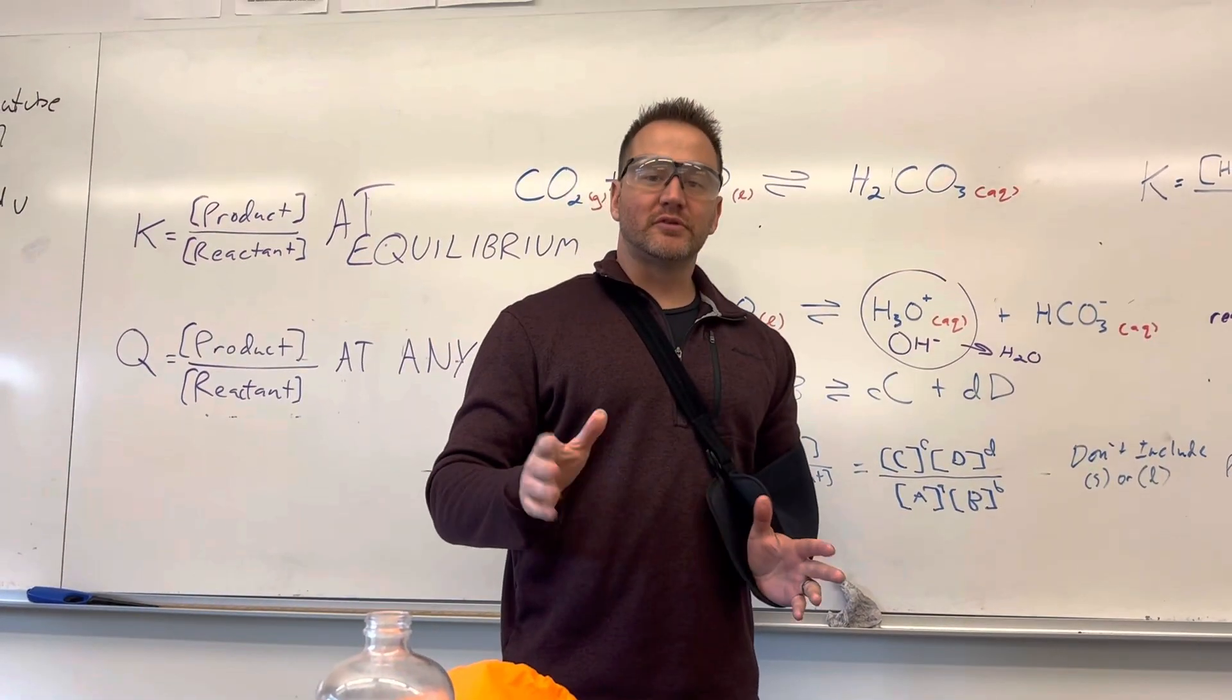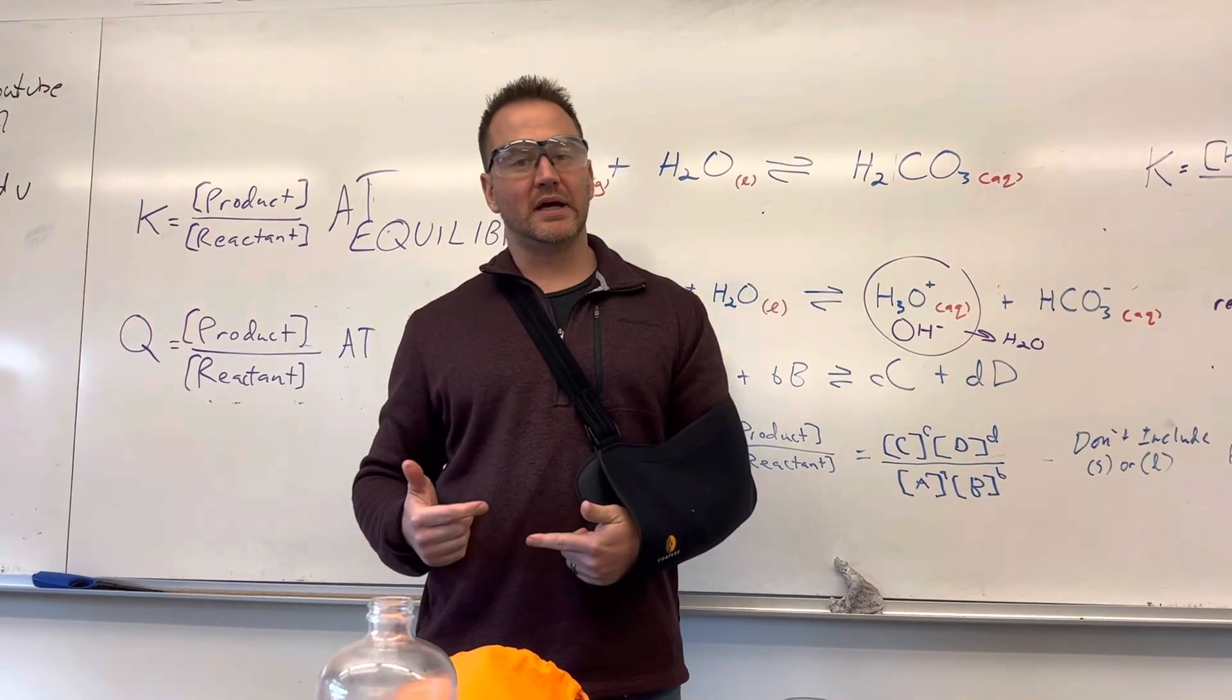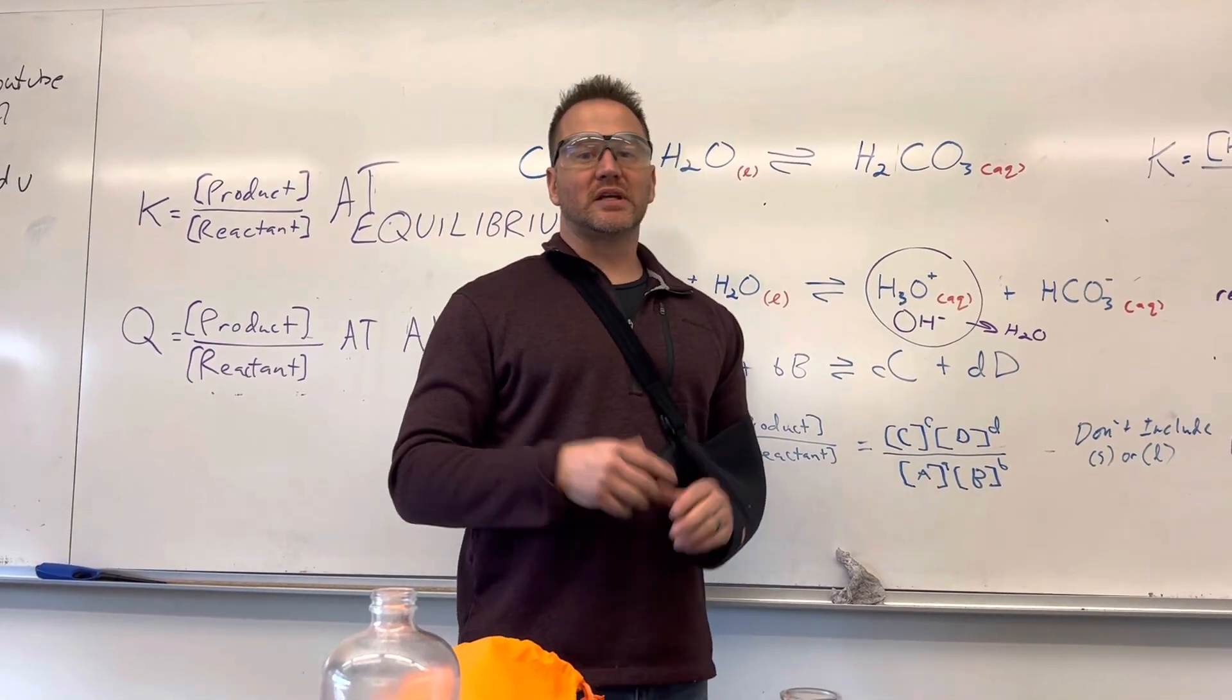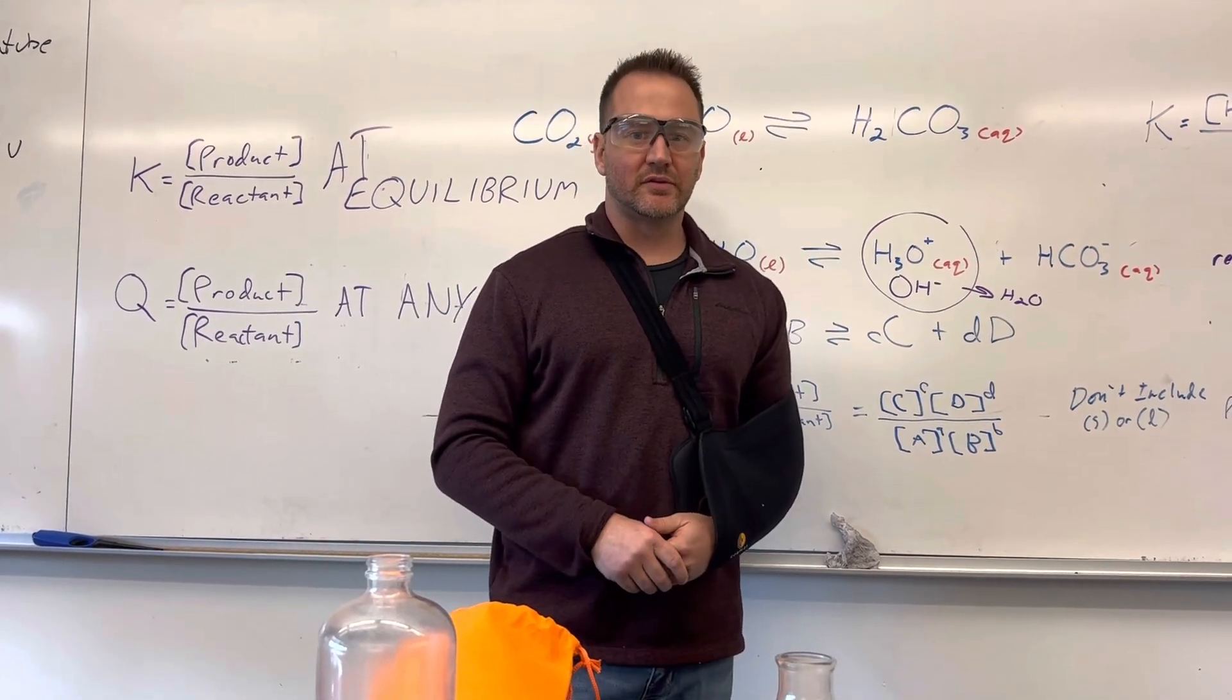So equilibrium—some equilibrium reactions are reactions that can go both in the forward and reverse direction, and we can use a K value to describe that ratio of product to reactants that would exist at a given set of conditions.